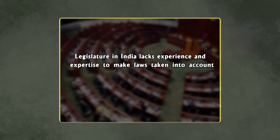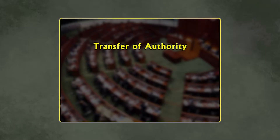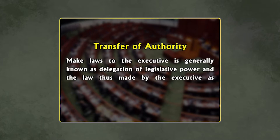Apart from the directive principle laid down in Article 50, which enjoins separation of the judiciary from the executive, the constitutional scheme does not embody any formalistic and dogmatic division of powers. The legislature in India lacks experience and expertise to make laws taking into account present and future requirements in a developing country. Therefore, by retaining the policy of lawmaking with the legislature, the details, procedures, and methods of implementation can be left to the wisdom of the executive, authorizing them to supply flesh and blood to the skeletal legislation enacted by the legislature. This transfer of authority is generally known as delegation of legislative power, and the law thus made by the executive as delegated legislation.